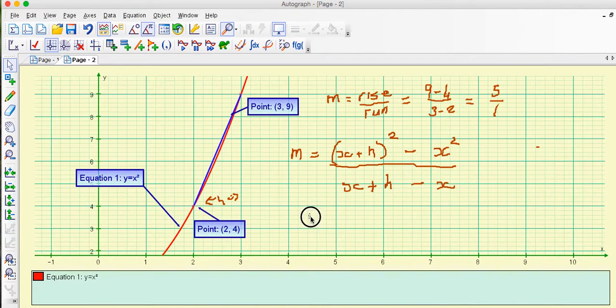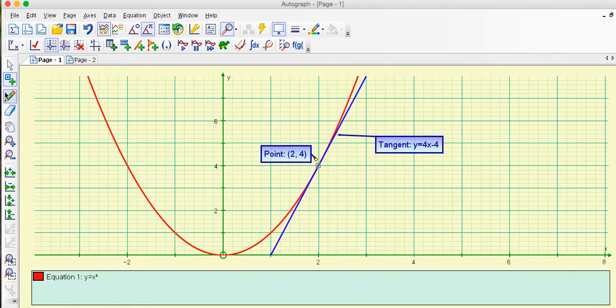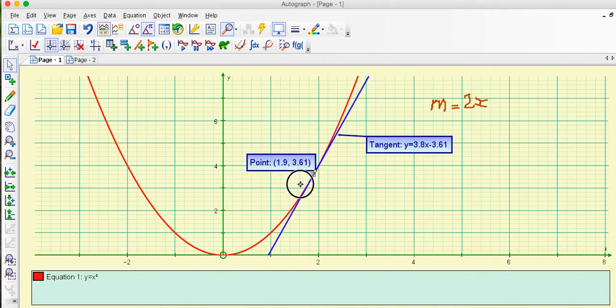So when I do all the algebra here m is 2x and that means I can find my gradient at any point. If we go back into the first one remember my gradient is m for the gradient equals 2x so when I'm at 2 I put 2 in here 2 times 2 gives me 4 for the gradient. Let's move this to 1.